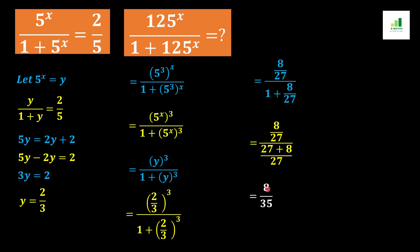So the value of 125^x over (1 + 125^x) is 8 over 35. I hope you all liked this video. If you liked it, please hit the like button and subscribe to our channel. Thank you.